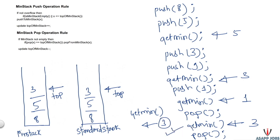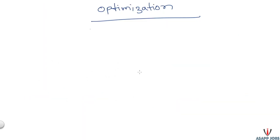That's how we solve this problem. The min stack is used only for getMin operations, while other standard operations like push, pop, isEmpty, and isFull use the standard stack. Now, can we optimize the solution to completely get rid of the auxiliary stack?